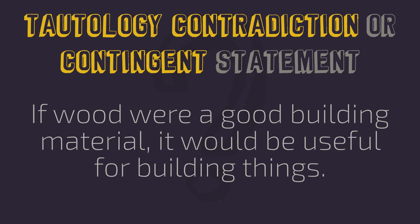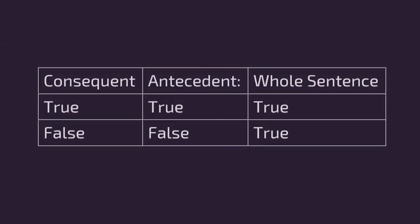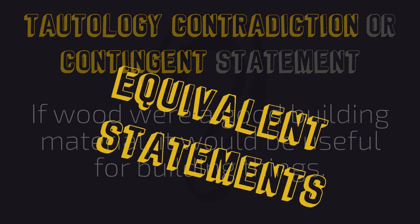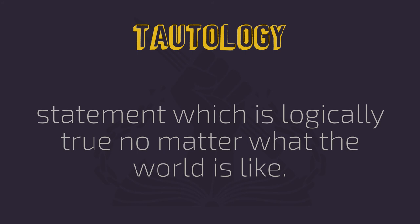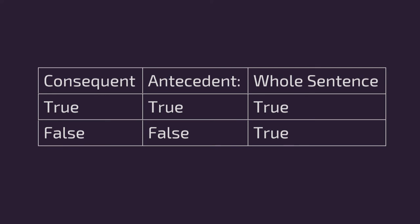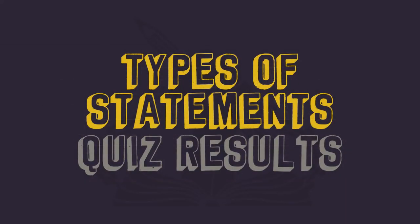So here's our completed chart: the consequent, the antecedent, and the entire sentence. We have true, true — the whole sentence is true. And then false, false — the whole sentence is also true. This would be a tautology, because a tautology is a statement which is logically true no matter what the world is like. We've looked at the two ways the world can be relative to the statement, and no matter what, the statement is true. So there you have it — a quick discussion on some of the problems we missed concerning different types of logical statements. As always, stay open-minded and curious, and I'll catch you all in the next video.